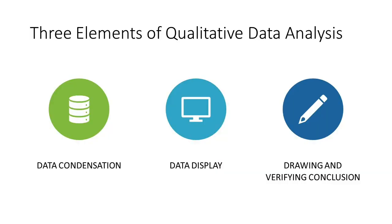Miles, Huberman and Saldana describe three elements of qualitative data analysis. Though often presented sequentially, data condensation, data display, and drawing and verifying conclusions take place concurrently. They define data condensation as selecting, focusing, simplifying, abstracting, and or transforming the data that appear in the full corpus of written-up field notes, interview transcripts, documents, and other empirical materials. Coding is part of condensing data.